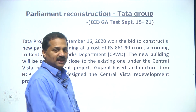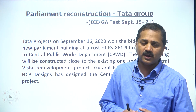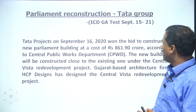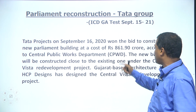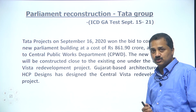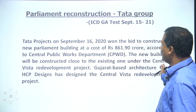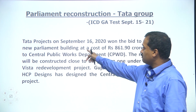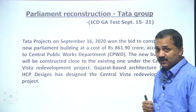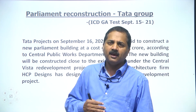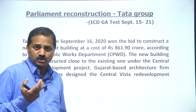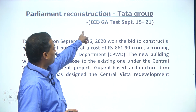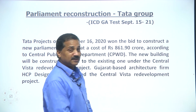Parliament reconstruction — the Prime Minister has big plans for a full parliament complex. The cost is ₹8,861.9 crore according to the CPWD. The new building will be constructed by Tata Projects, which on September 16 won the bid for the construction. That came up in our daily test of September 15–21.